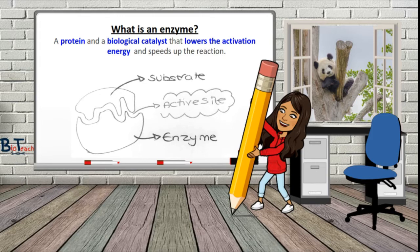If you haven't looked at my video on protein structure and how amino acids are used as monomers to put together proteins into their primary, secondary, tertiary, and quaternary structure, you might want to go back and look at that, or just click on the link on your screen. Enzymes control metabolic pathways. One enzyme will act on a substrate to produce the next reactant in a pathway, which will then be acted on by a different enzyme.